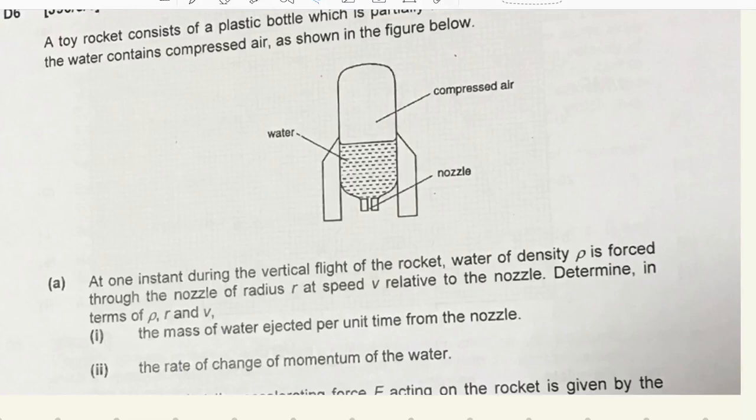Question A. At one instant during the vertical flight of the rocket, water of density rho is forced through the nozzle of radius r at speed v relative to the nozzle. Determine in terms of rho, r, and v: Part one, the mass of water ejected per unit time from the nozzle. Part two, the rate of change of momentum of the water.